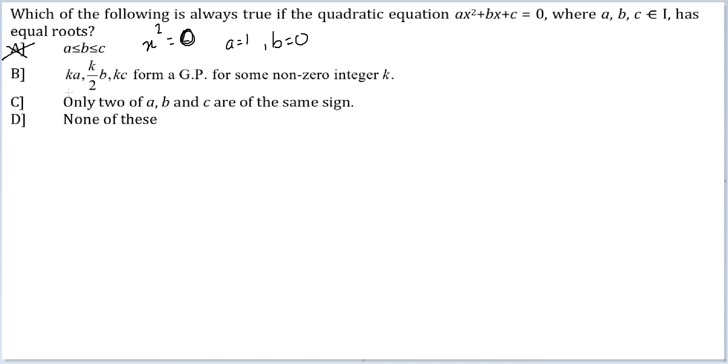Let us look at option B: ka, k(b/2), and kc form a GP for some non-zero integer k. We'll check this later because this seems like there will be processing involved. Option C: Only two of a, b, and c are of the same sign.